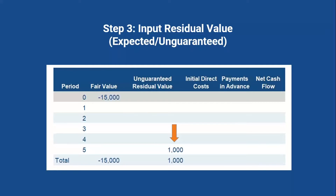Next, we're going to input the residual value. This is the estimated value that the lessor is going to get back — what the asset is going to be worth as of the end of the lease. In this case it was $1,000, and you're seeing that this is input as of period five, essentially as of the end of the lease. That $1,000 is coming back to the lessor, so it's going to be a positive cash flow for the lessor.